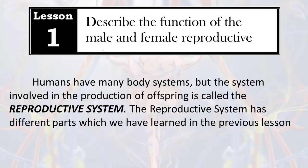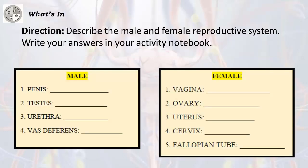Lesson 1: Describe the function of the male and female reproductive system. Humans have many body systems, but the system involved in the production of offspring is called the reproductive system. The reproductive system has different parts, which we have learned in the previous lesson.